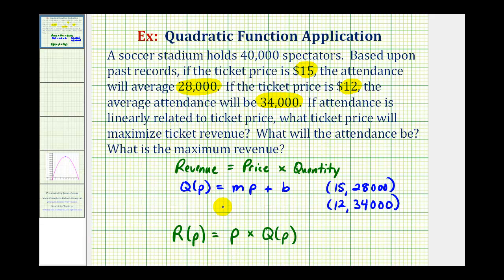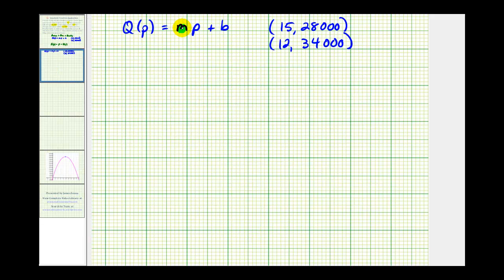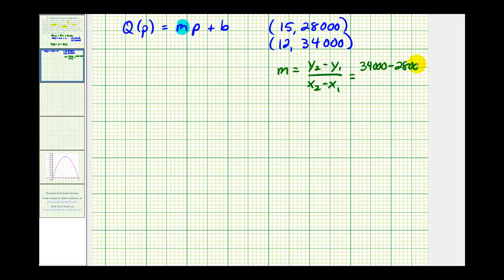We'll first find the slope of the line using the slope formula: M equals Y₂ minus Y₁ divided by X₂ minus X₁. The difference in the Y values will be 34,000 minus 28,000, divided by 12 minus 15. This comes out to negative 2,000.